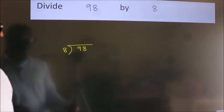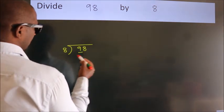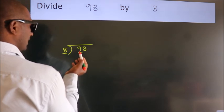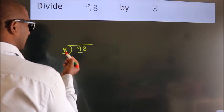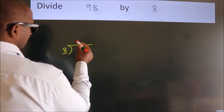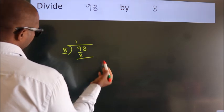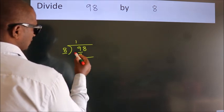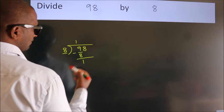Next, here we have 9, here 8. A number close to 9 in the 8 table is 8 times 1 is 8. Now we subtract and get 1.